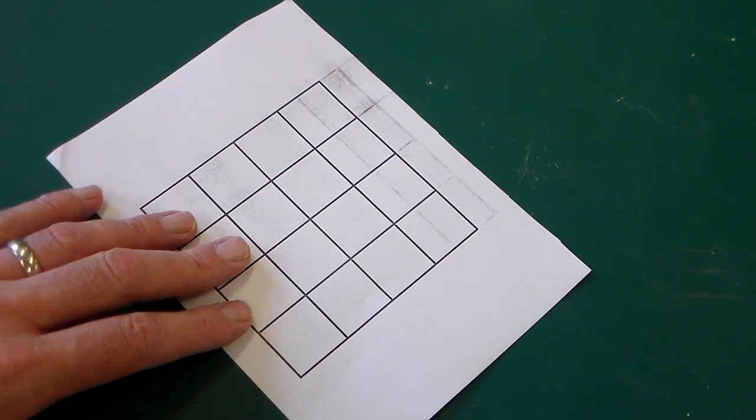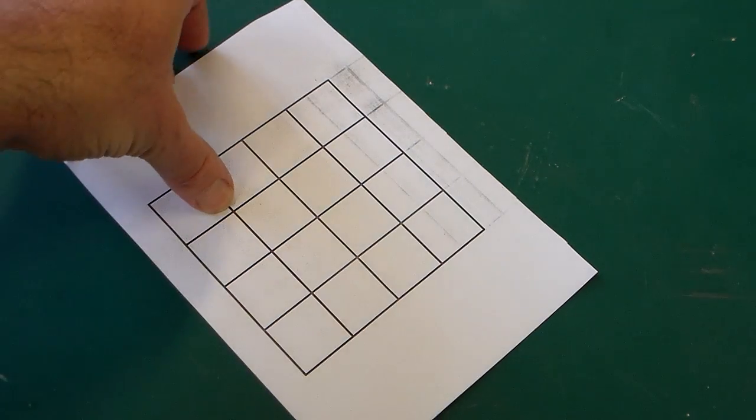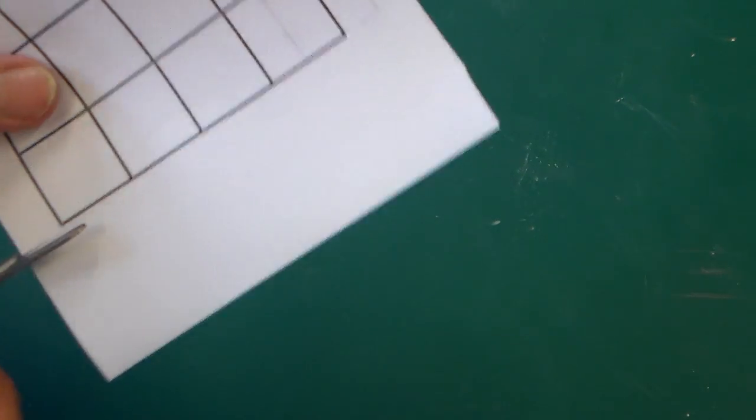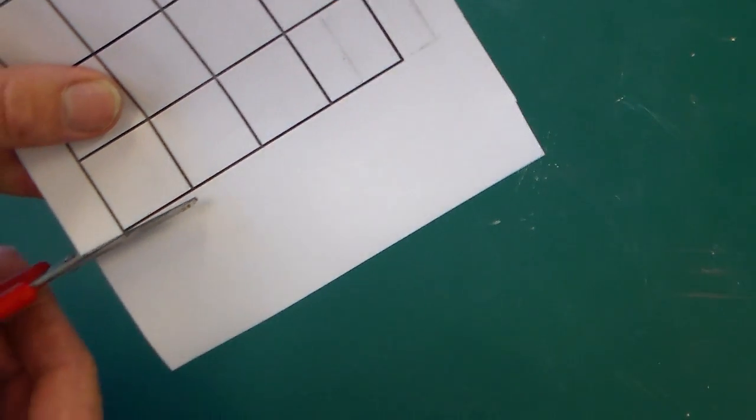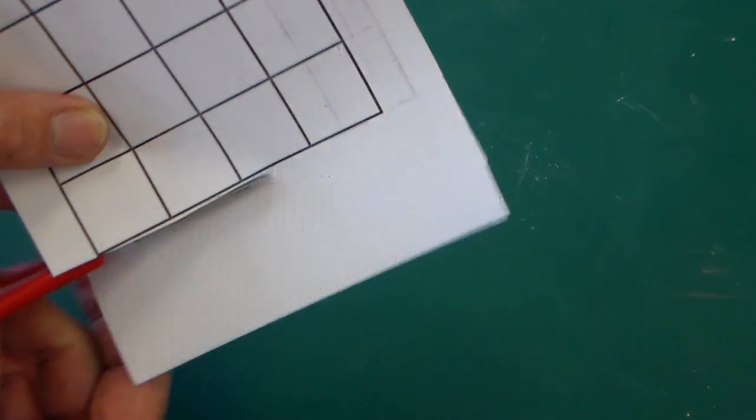It might be worth just checking this once you've cut it out. The first thing we're going to do is take a pair of scissors and just cut around the outside.